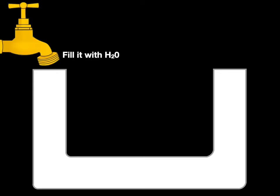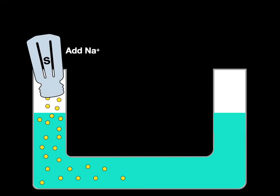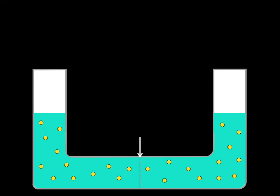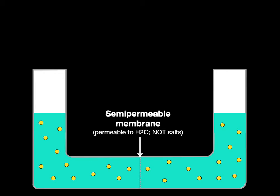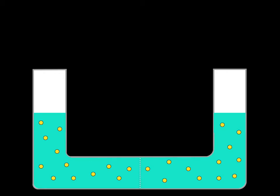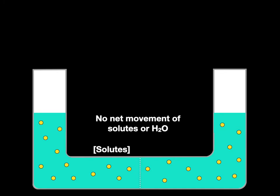Now let's show that in this picture where we have a U-shaped tube filled with water. We add salt to the water solution and in the middle we put a semi-permeable membrane that's permeable to water but not salts. Nothing happens because there's no net movement of solutes or water, because the solute concentration on this side equals the solute concentration on the other side of the membrane.